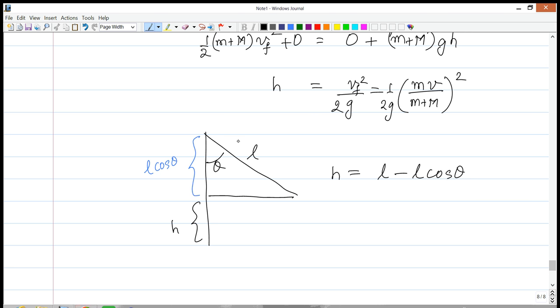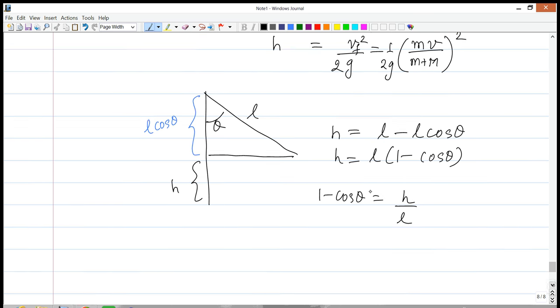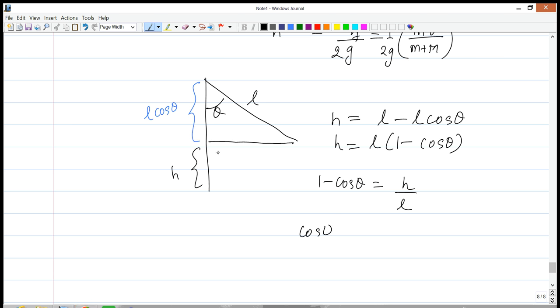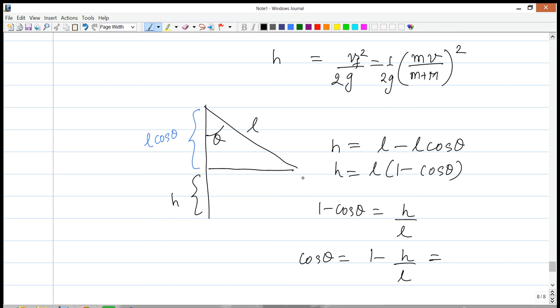Great. We are in business now. And we can write this as L times 1 minus cosine of theta is equal to h. So 1 minus cosine of theta is equal to h over L. One more step. Cosine theta is 1 minus h over L. And here, now we can plug in the values for h and obtain the rest of the stuff.